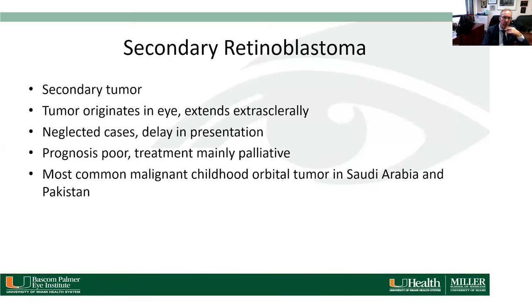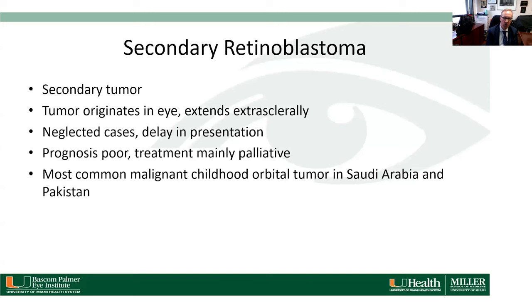Secondary tumors are defined as tumors that extend into the orbit from other structures — from the paranasal sinuses, skin, or nose — and also include tumors that extend from the eye into the orbit. Secondary retinoblastoma starts in the eye and, if left untreated, can erode through the eye and extend to the orbit. These are usually neglected cases with delayed presentation, and the prognosis is poor with mainly palliative treatment.